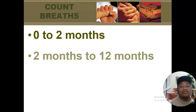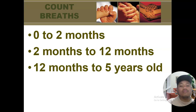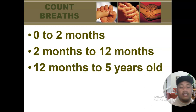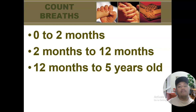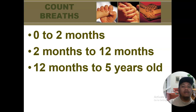We check the child's age group: zero to two months, two to twelve months, and twelve months to five years old. The lower the age, the higher the normal respiratory rate. For zero to two months, above 60 breaths per minute is fast breathing. For two to twelve months, above 50 is fast breathing. For twelve months to five years old, above 40 is fast breathing. Normal breathing is less than 60, less than 50, and less than 40 respectively.